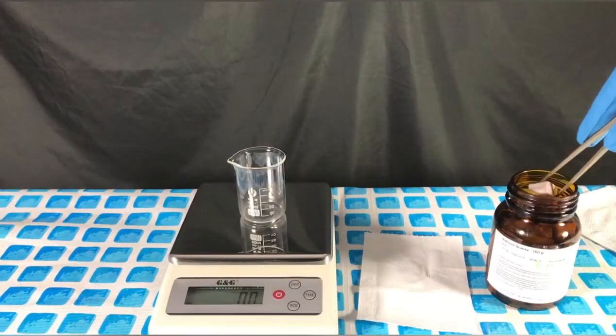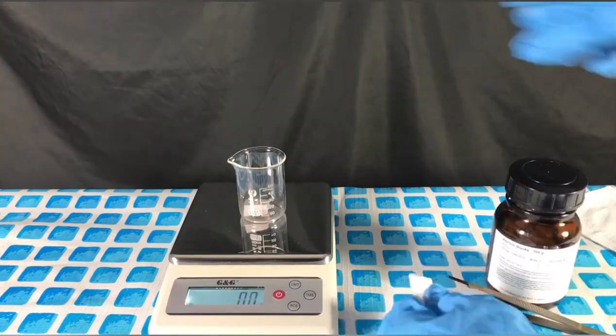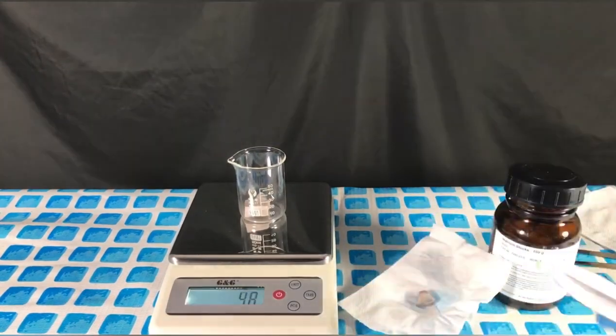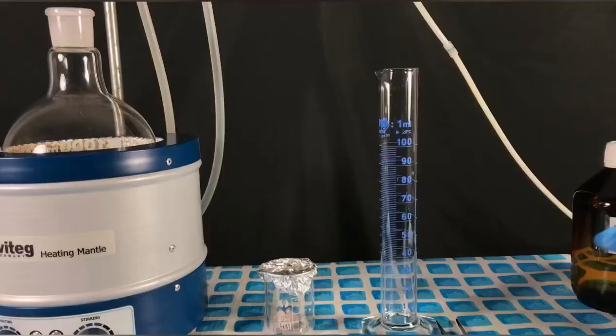We start off by weighing out 5.8 grams of sodium metal. The sodium metal was wiped dry to remove any paraffin that stuck to its surface.